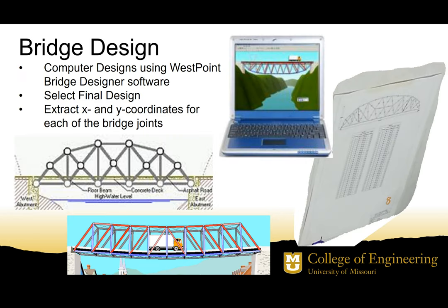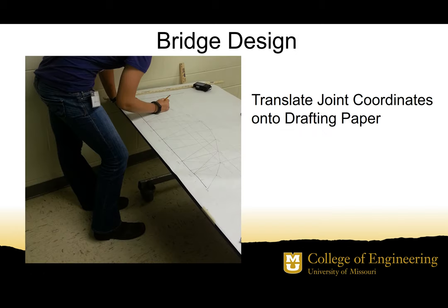There's a whole separate video that describes the software — how to download it, how to use it, how to create joints, floor beams, floor, and truss, and how to run the truck to make sure your members are safe. Members in red are in compression, so you need to either strengthen them or subdivide them to reduce the buckling load. Once you finish your design, you can get the coordinates of all points representing your bridge and translate that to the scaled model.